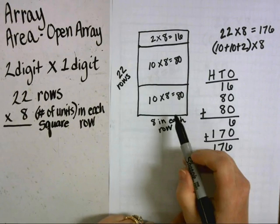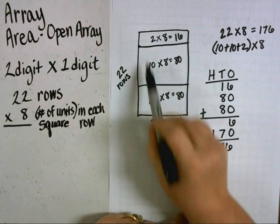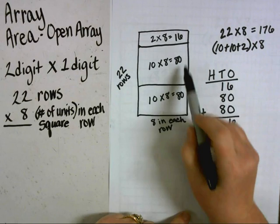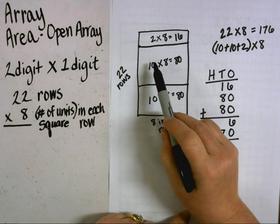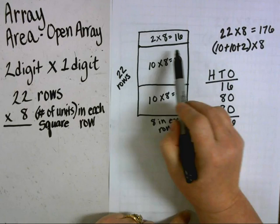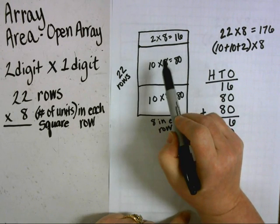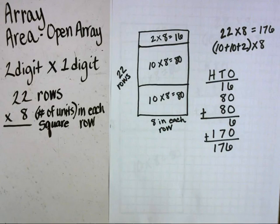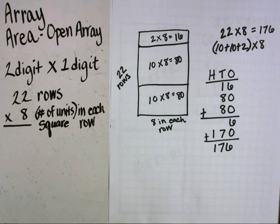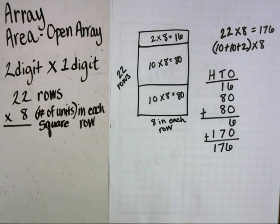The difference between the two models — area and array — is that for the area model you don't have all of the squares drawn, and you have to remember how many rows you have and how many are in each row. Now it's your turn to continue to practice the array and area priority strategy in workstations at school and at home. If you need reminders, please revisit this video. Thank you, Roadrunners. This is Mrs. Kim, your Clear Spring Math Coach.